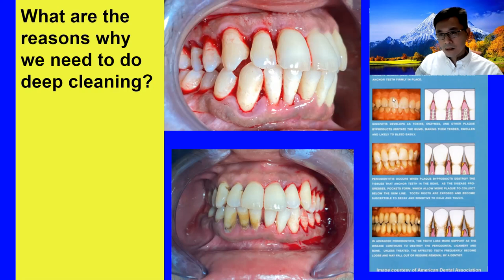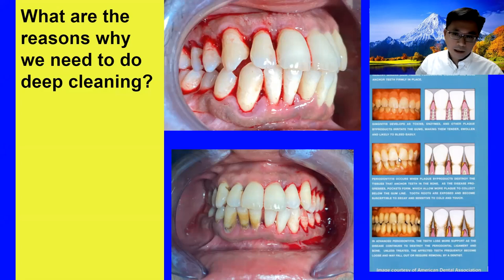When you have gingivitis, it's basically when you have reddish gum and plaque buildup, but you don't have any bone problem — the bone is still solid. Early gum disease is when you have some bone loss and plaque buildup, commonly seen with teeth that are not straight, crowded, or that have a hygiene problem.